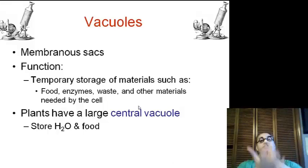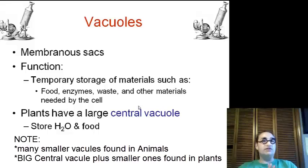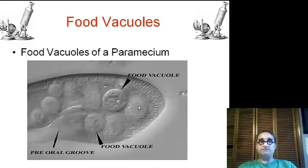Now, vacuoles. Vacuoles are sacs. They are membranous sacs, and they provide temporary storage for food, enzymes, waste, water, and other needed materials. And there is a very large one in plants known as the central vacuole. It takes up most of the cells. Now, in animals, we do have vacuoles. They are just not as large as the central vacuole in plants. Such as food vacuoles here in the Paramecium. It holds the food once it is brought in.